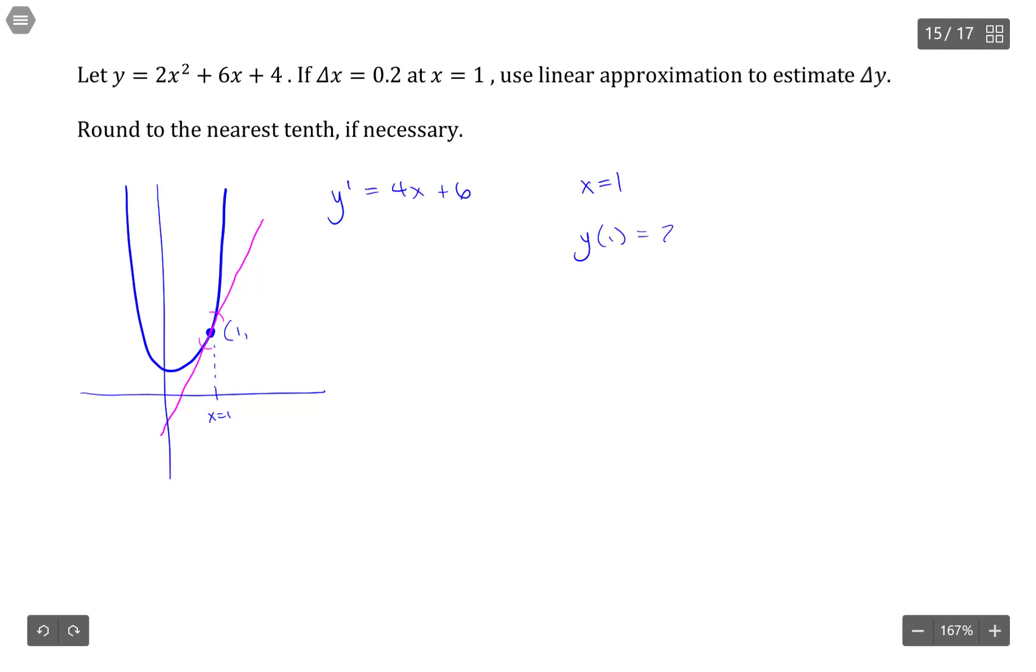I'll say y of 1 equals 2 times 1 squared plus 6 times 1 plus 4. So that would be 10, so 12. So this is at 1, 12. The slope of the tangent at that particular point would be the first derivative evaluated at 1. So this would be 4 times 1 plus 6, which is 10.